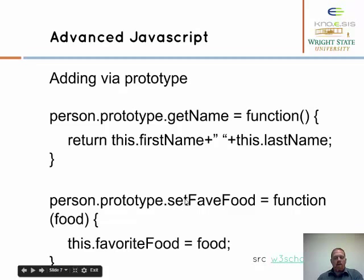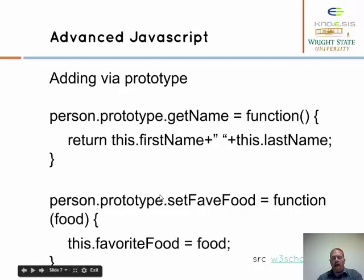So we can add another method to set the favorite food. Before we added the property 'favorite food' with an empty string, but now we have a way to actually pass in the favorite food value and set it.